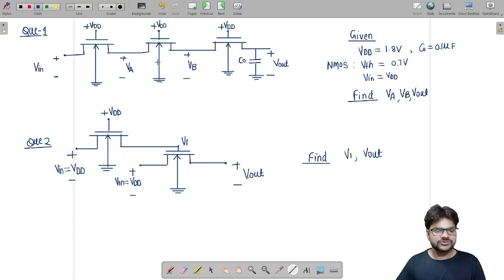In question number one, we have three NMOS connected in chain configuration. We are given that VDD equals 1.8 volts, C0 (output capacitor) equals 0.1 microfarad, and for the NMOS we have threshold voltage 0.7 volts and VIN equals VDD. We have to find out VA, VB, and Voutput.